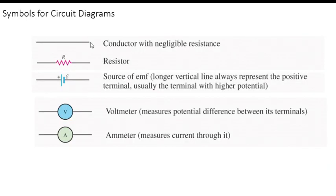You must be familiar already with the different symbols in our circuit diagrams. We have a straight line for the conducting wire or conductors with negligible resistance. We also have the symbol for our resistor with a capital R, and the source of EMF or our power supply — the longer line is the positive terminal and the shorter line is the negative terminal. The symbol for our voltmeter is a circle with a V at the middle, and the symbol for our ammeter is a circle with an A at the middle.